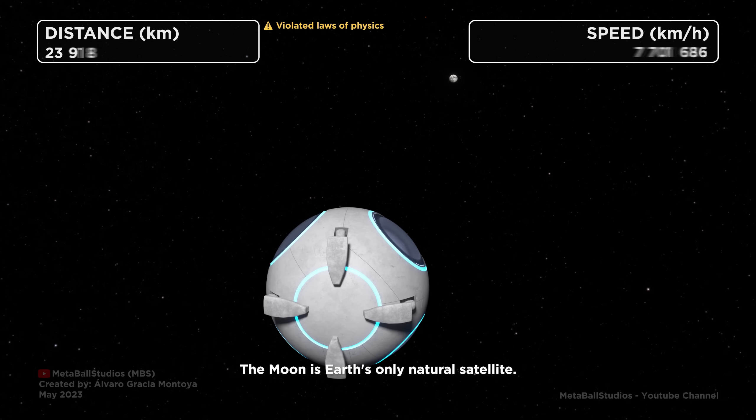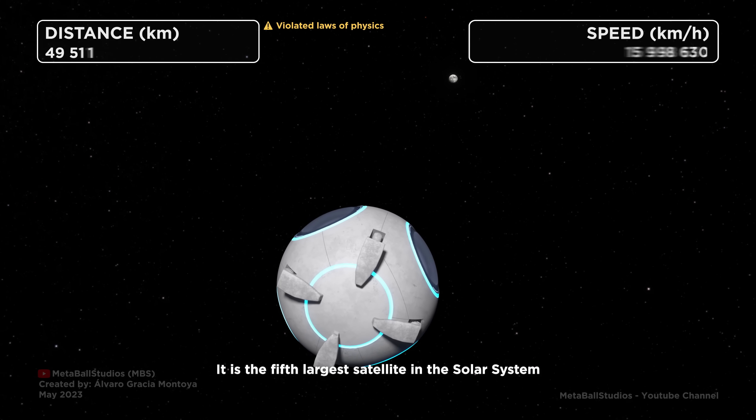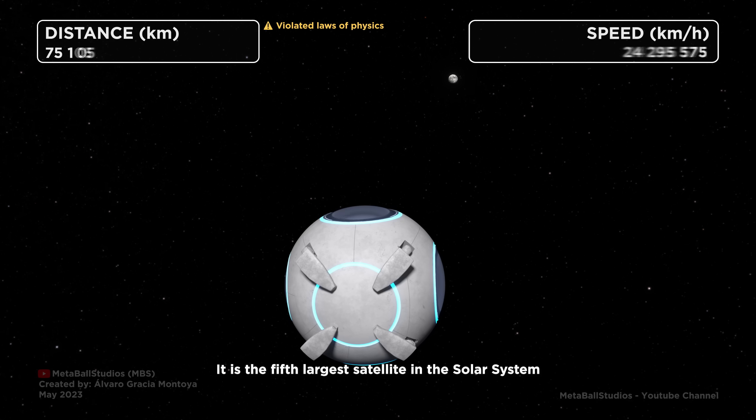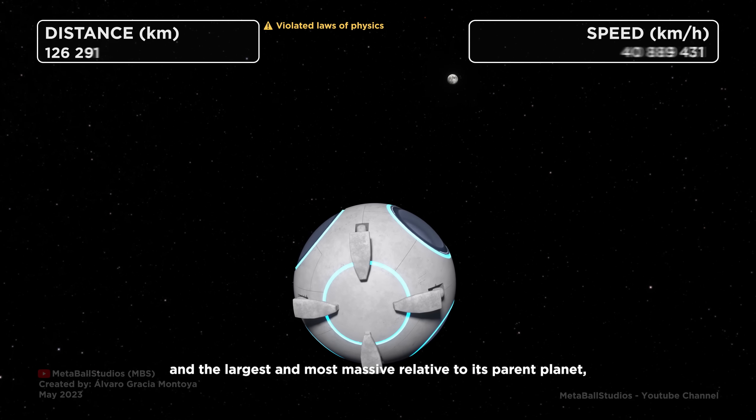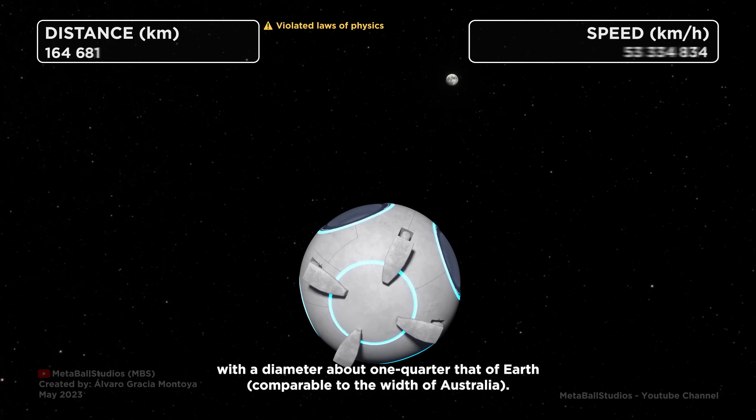The Moon is Earth's only natural satellite. It is the fifth largest satellite in the solar system and the largest and most massive relative to its parent planet, with a diameter about one quarter that of Earth.